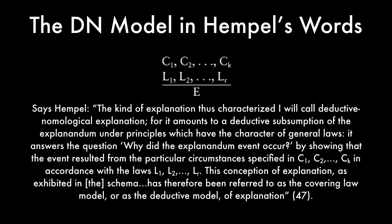Says Hempel: 'The kind of explanation thus characterized I will call deductive-nomological explanation, for it amounts to a deductive subsumption of the explanandum under principles which have the character of general laws. It answers the question — why did the explanandum event occur — by showing that the event resulted from the particular circumstances specified in C1, C2, etc., in accordance with the laws L1, L2, etc.' This conception of explanation has been referred to as the covering law model or the deductive model of explanation. The model also goes by the names deductive-nomological model, covering law model, or simply the classical model of scientific explanation.